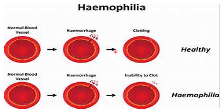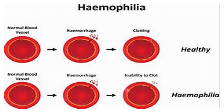This is a pictorial representation about Haemophilia, where one side shows healthy blood and the other shows blood which has Haemophilia. Whenever there is haemorrhage, there is clotting in healthy blood which stops the bleeding. But in Haemophilia, there is an inability to clot, which leads to continuous bleeding.